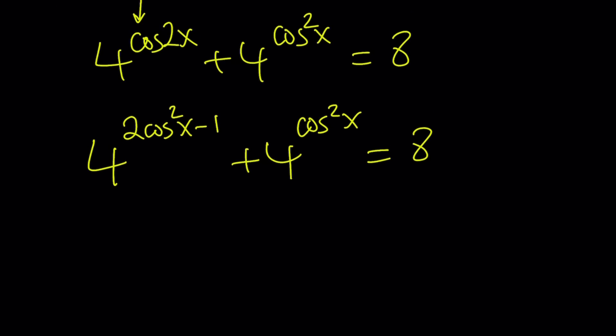So I'm going to replace cosine 2x with this. Okay? Let's do it. That gives us 4 to the power 2 cosine squared x minus 1 plus 4 to the power cosine squared x equals 8. Do you see that this is going to turn into a quadratic equation? Hopefully you do. First of all, I would like to separate this into this because when the bases are the same and division is applied, we subtract the exponents.